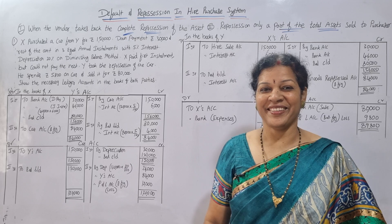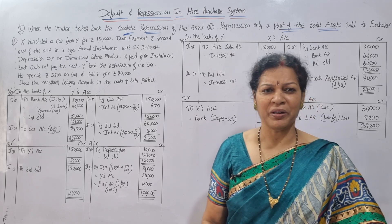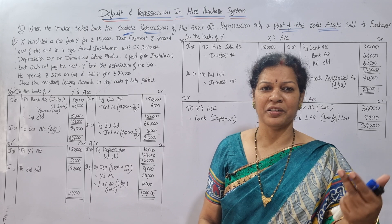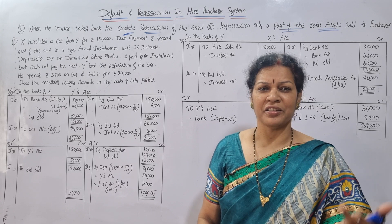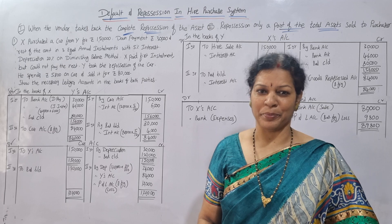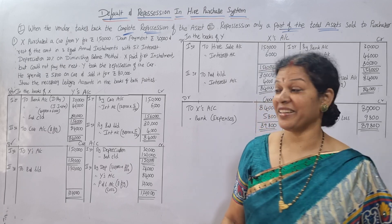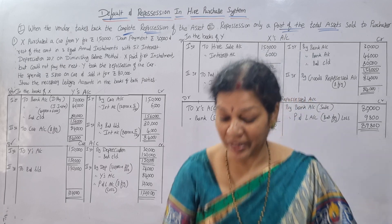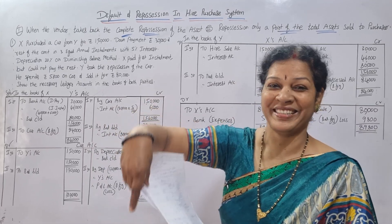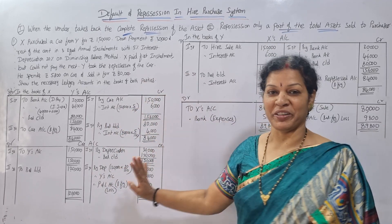Both are different concepts. Today's class will focus on the first case — complete repossession — and the second case will be covered in the next class. You already understand the hire purchase method: how to calculate interest, depreciation, and prepare the accounts. The same procedure applies with a small difference I'll explain. I've already worked out this problem in advance to save time.